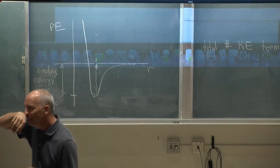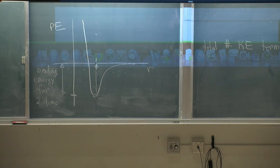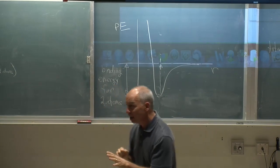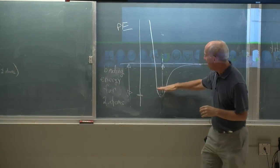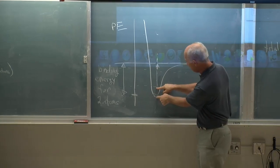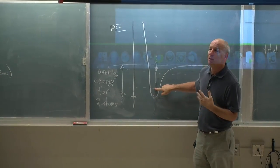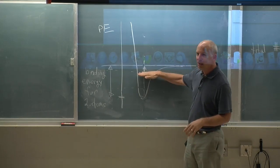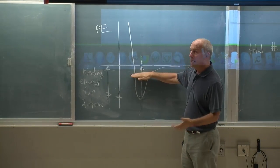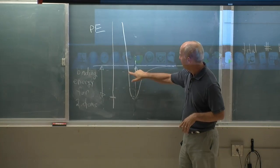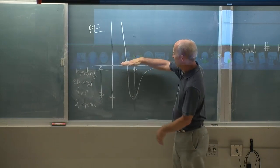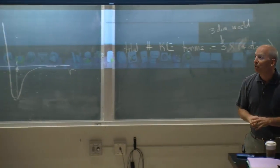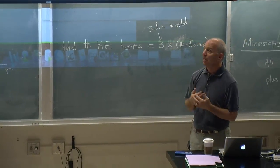Student: So if the question was asking whether the atoms would still be bonded, would it matter how much kinetic energy there was? Instructor: If the question is about whether the atoms are bonded, it would absolutely matter. If the total energy is here so the kinetic energy is this big, they would be bonded because they go back and forth between those two points. If the total energy is up here they would be unbonded. So that is a different situation from asking what is the potential energy.